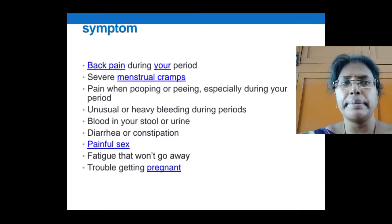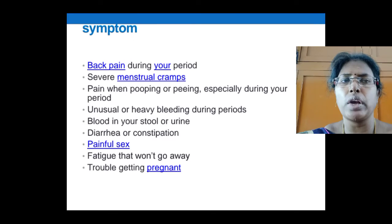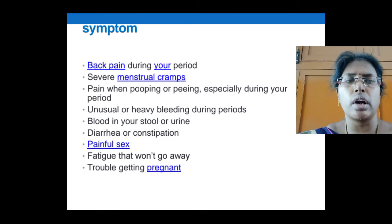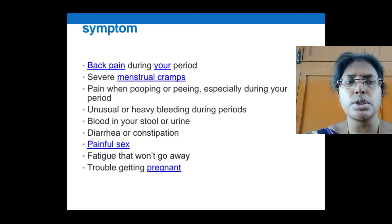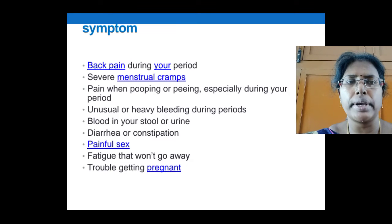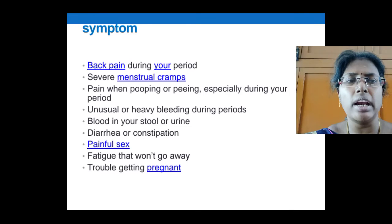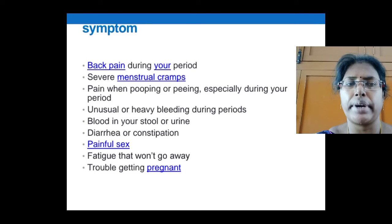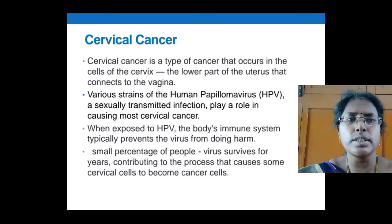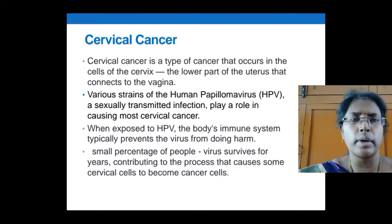The most common symptoms of endometriosis are back pain, severe menstrual cramps, pain when urinating or having a bowel movement, unusual or heavy bleeding during periods, blood in the stool or urine, diarrhea or constipation, painful sex, fatigue that won't go away, and trouble getting pregnant.